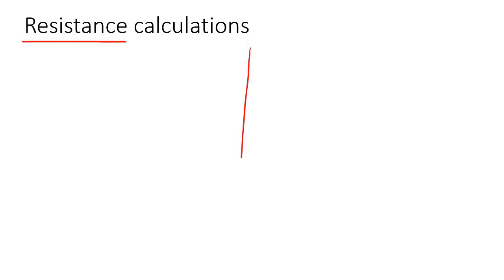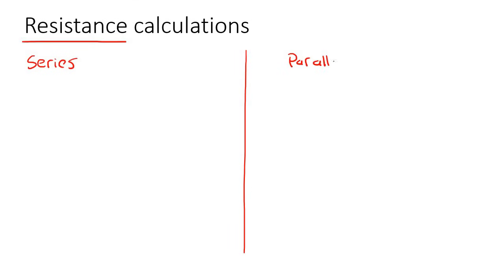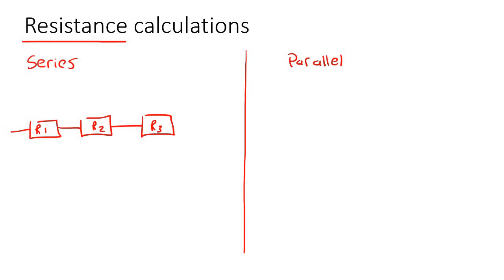We get two types of resistance scenarios. We get resistors connected in series — they literally go one after each other — with R1, R2, and R3. Resistors are things we are trying to power in a device: light bulbs, a buzzer, a fridge, a television — those are what resistors are.